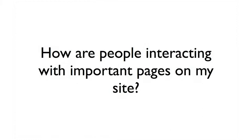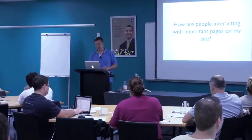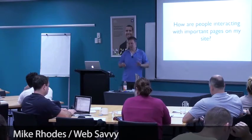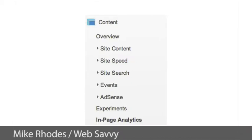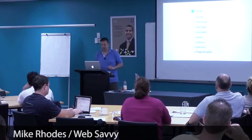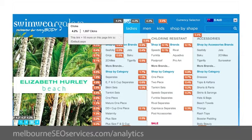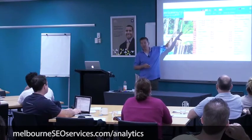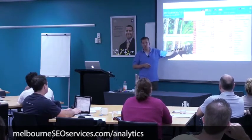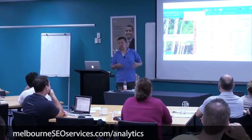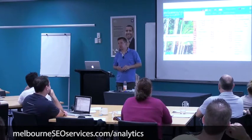How are they behaving on those important pages? This is a pretty funky report that doesn't always work perfectly — full disclaimer — but under the content section, right at the bottom, you'll find in-page analytics. It's not perfect. This is Andrew's site, no commercially sensitive data here I believe, but it'll show me even on the mega menus what people are clicking on.